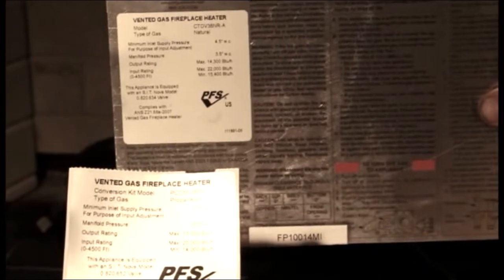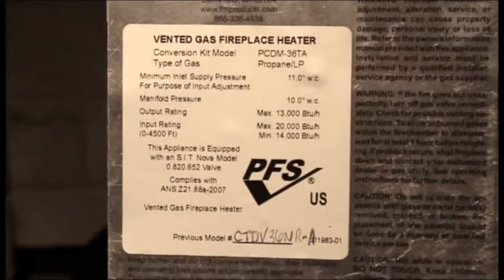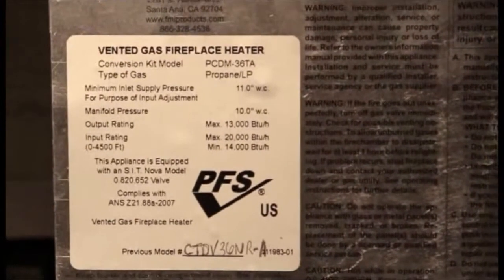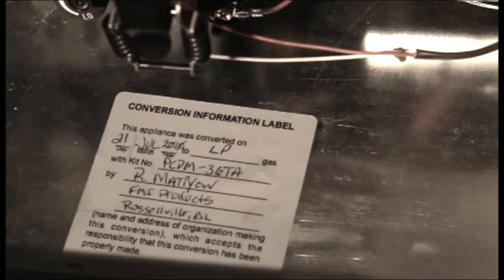Apply the conversion ID label supplied to the rating plate over top of the existing label. Conversion label must be filled out and affixed to the floor of the unit where visible.